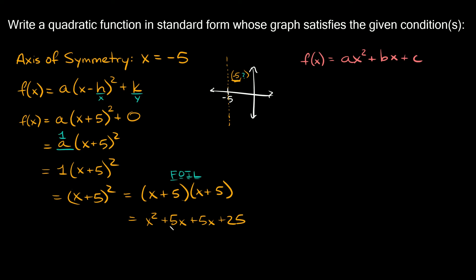Combining like terms here we have 5x plus 5x which is 10x, so our final answer for our function is going to be f of x equals x squared plus 10x plus 25. There's your function in standard form.